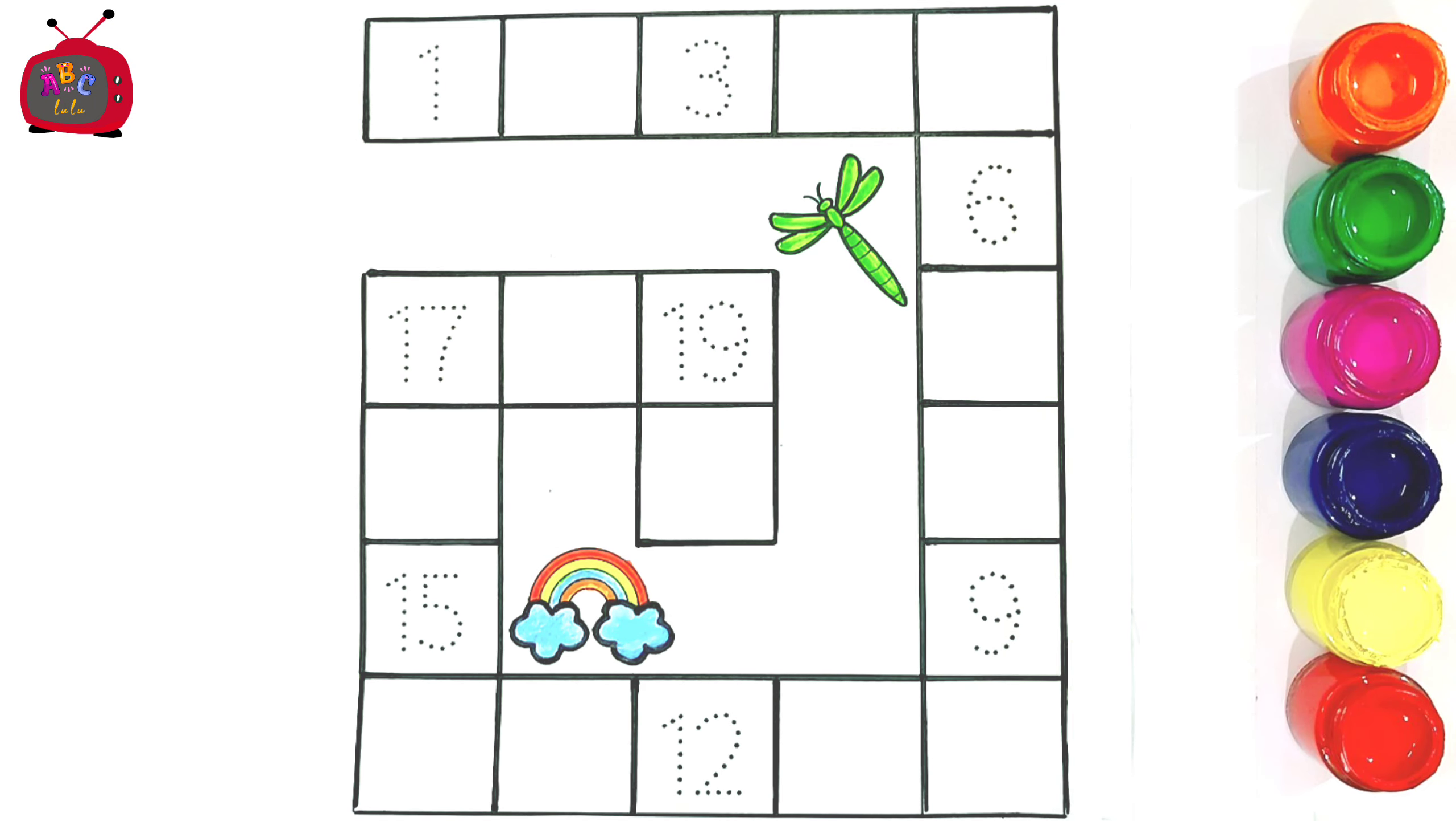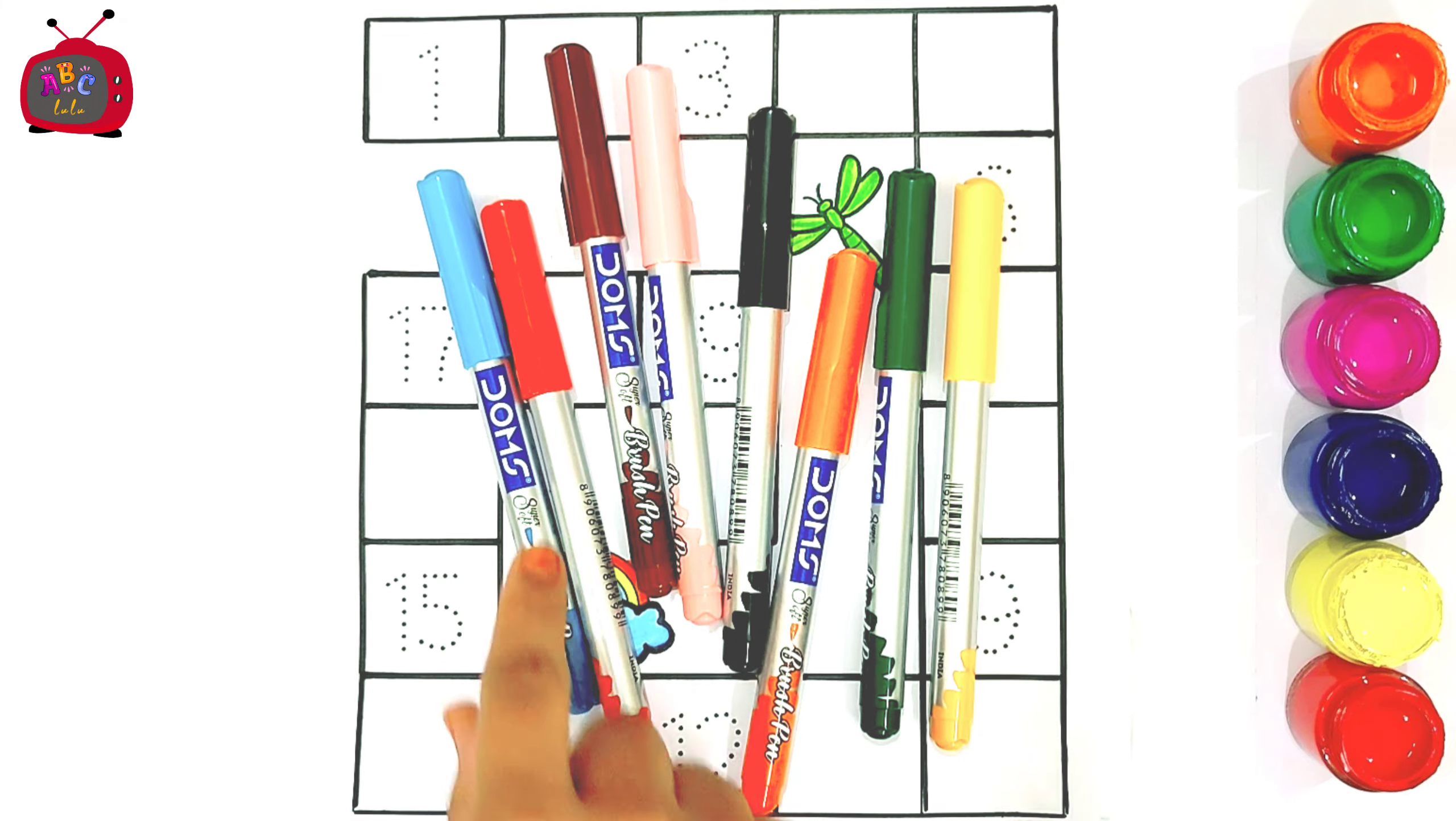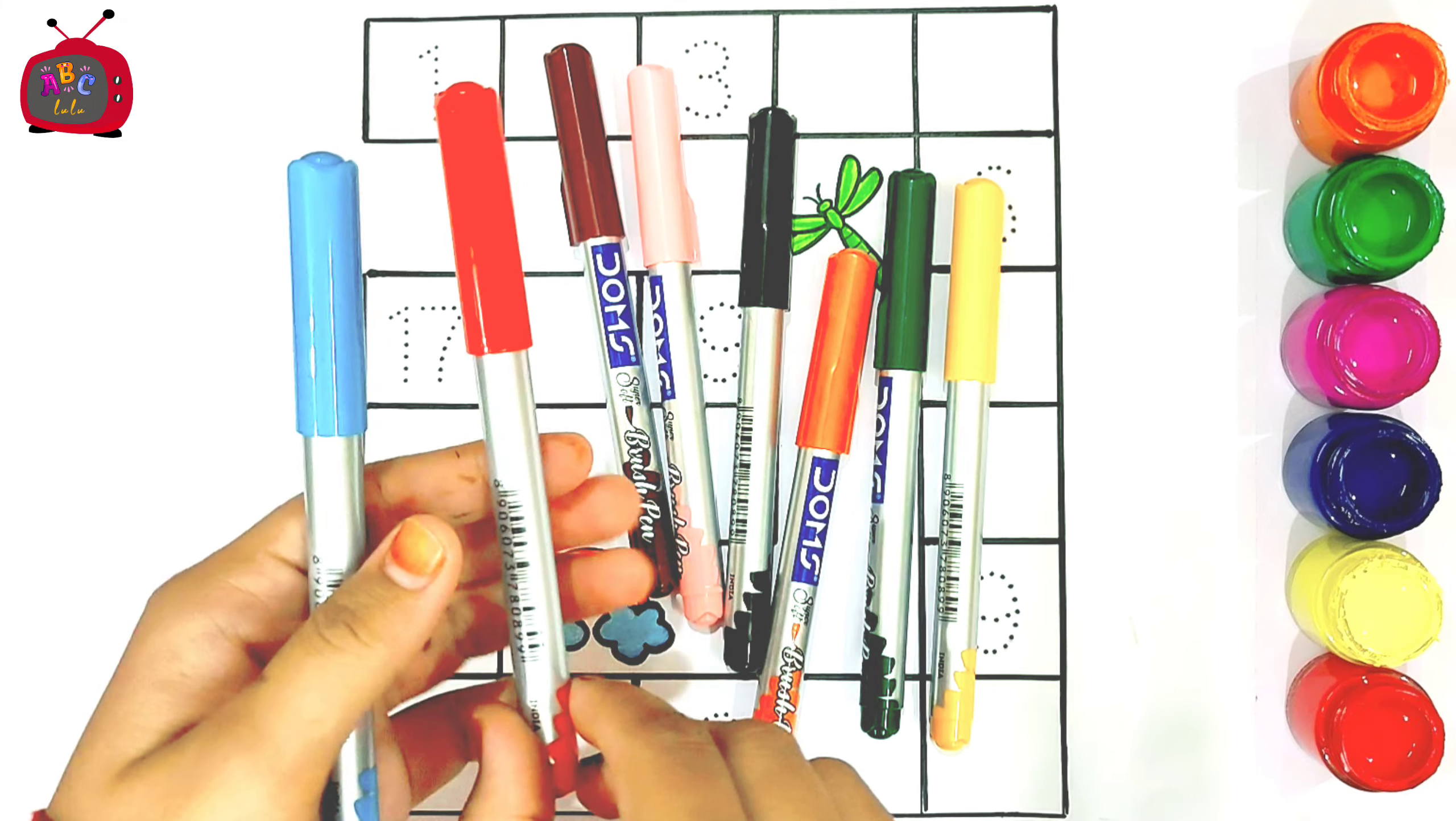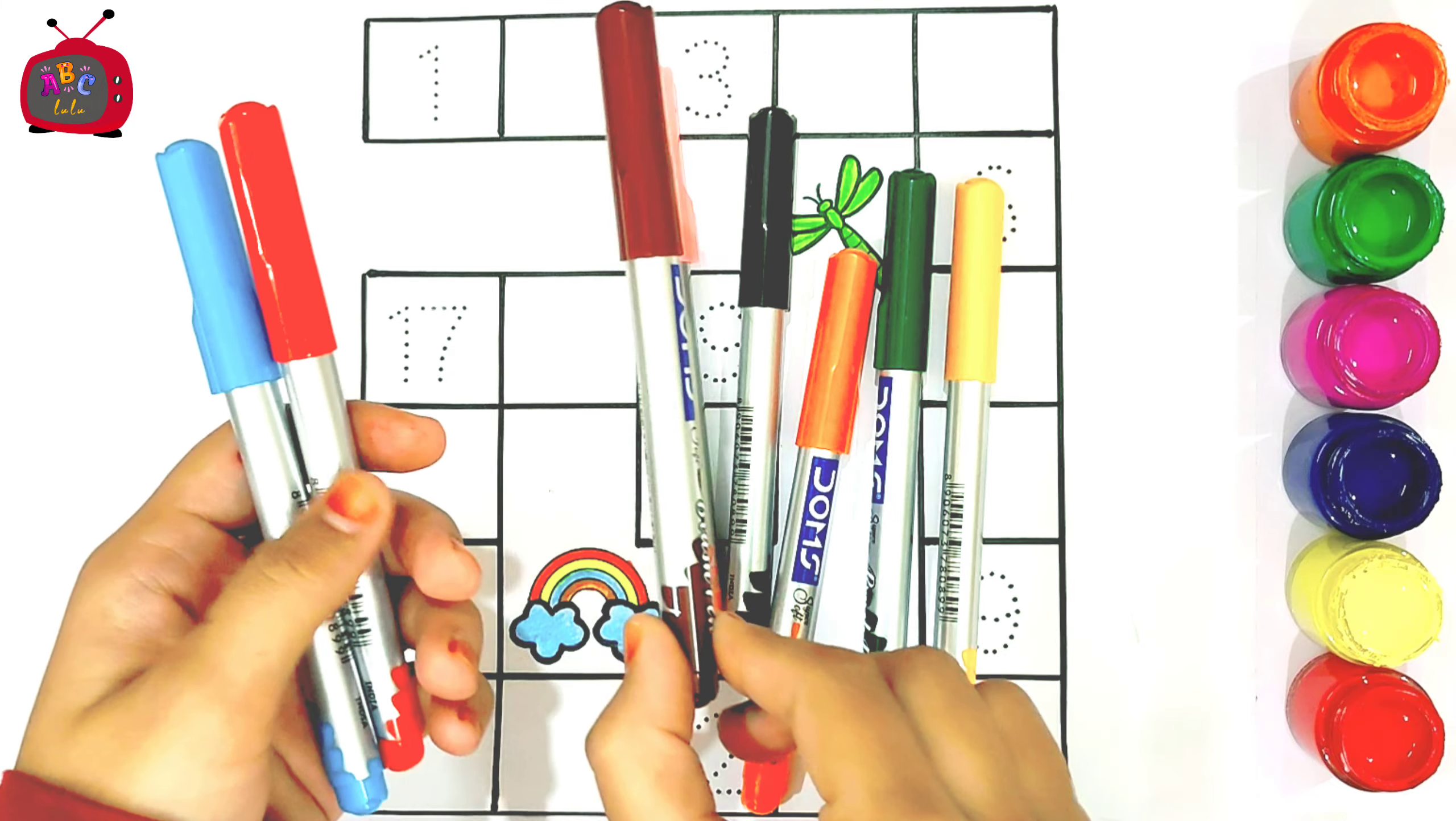Hello kids, in this project we fill the missing numbers 1 to 20. Colors: the sky blue, black color, brown.